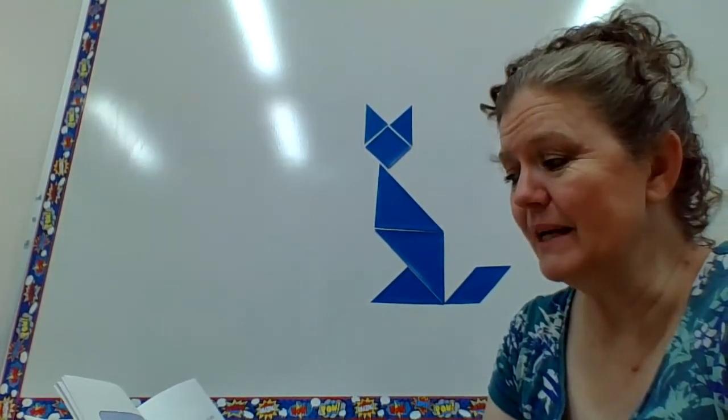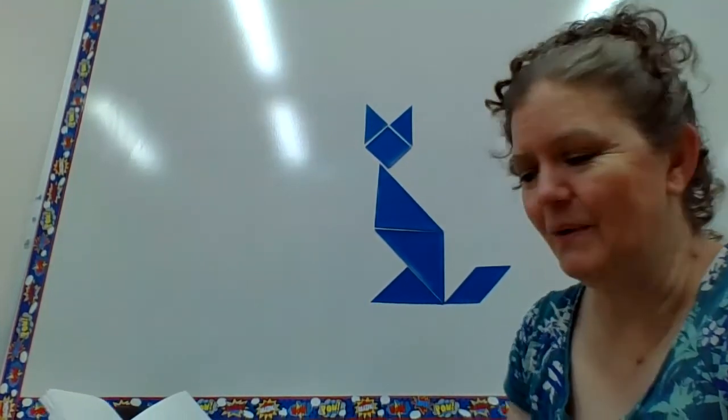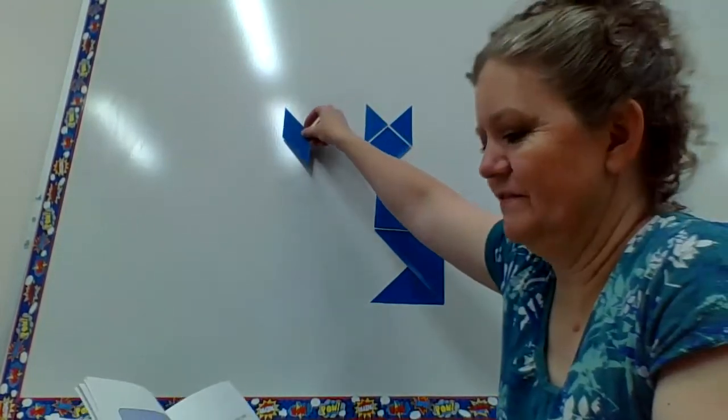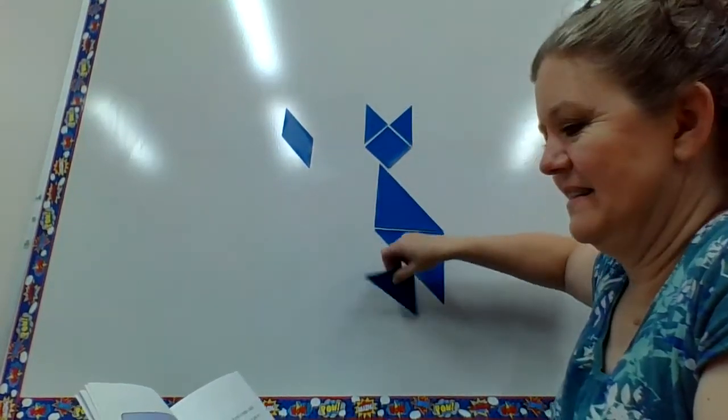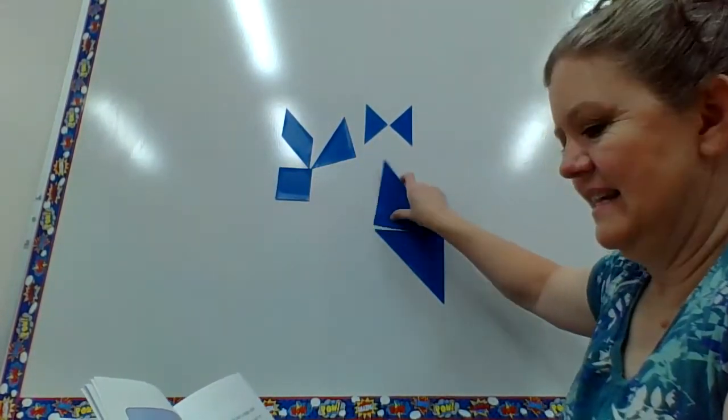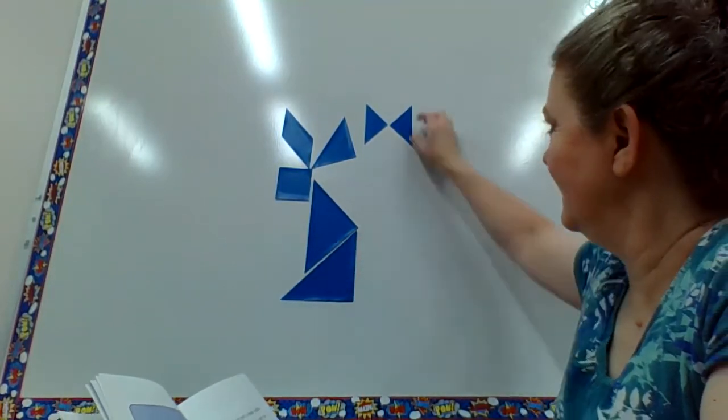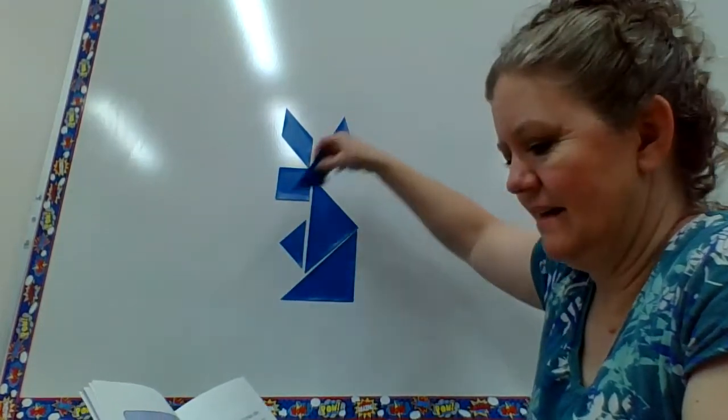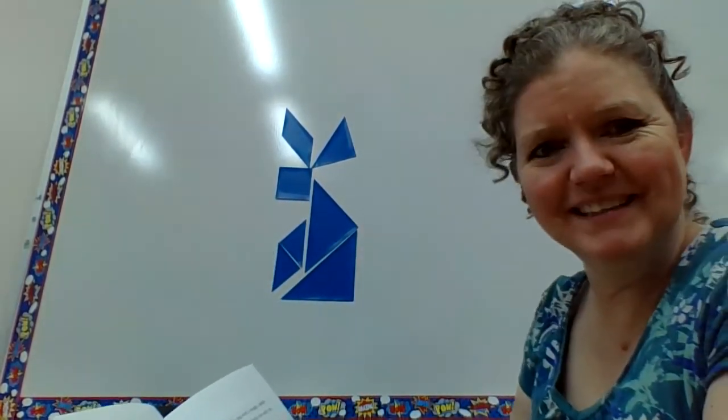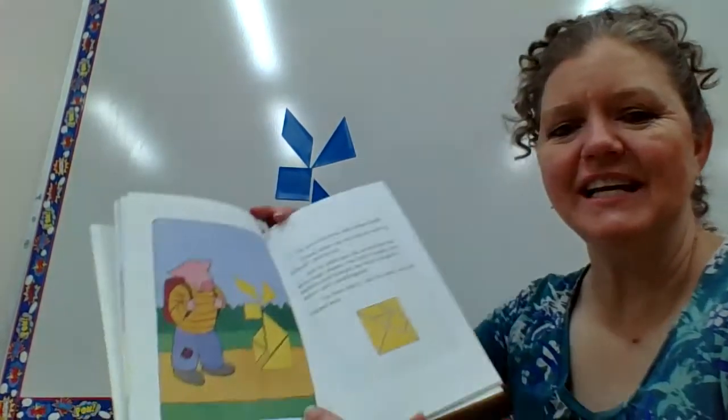The second little pig met a magic rabbit. Please, rabbit, can you help me seek my fortune? Said the pig. And the rabbit gave the second little pig seven magic shapes. So, do you think I can make the rabbit? I'm going to use the parallelogram first for the ear, the triangle for the other ear, the square for the head, then the big triangle, and the triangle for the body. And these two small triangles will make up the little paws. Do you see that cute rabbit?